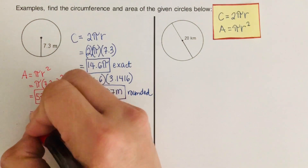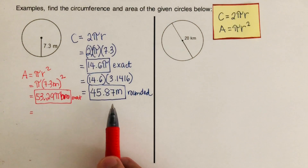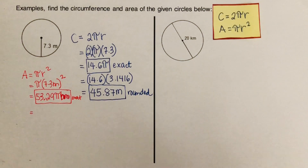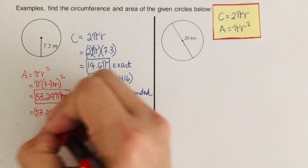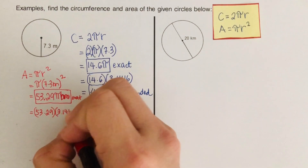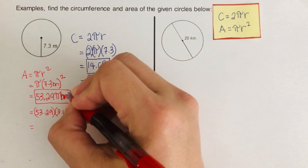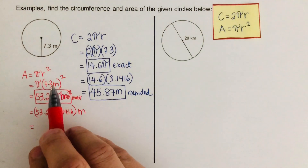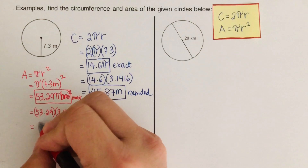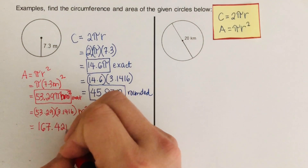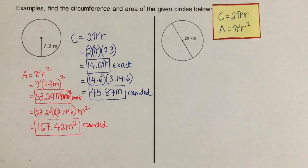There are two answers every time: the exact and the rounded. The exact has a pi in it; the rounded is a plain decimal. To find the rounded value, we multiply 53.29 by the pi value 3.1416. Since the unit is meters squared — meter times meter equals meter squared — this comes out to 167.42 meters squared. That is our rounded value.